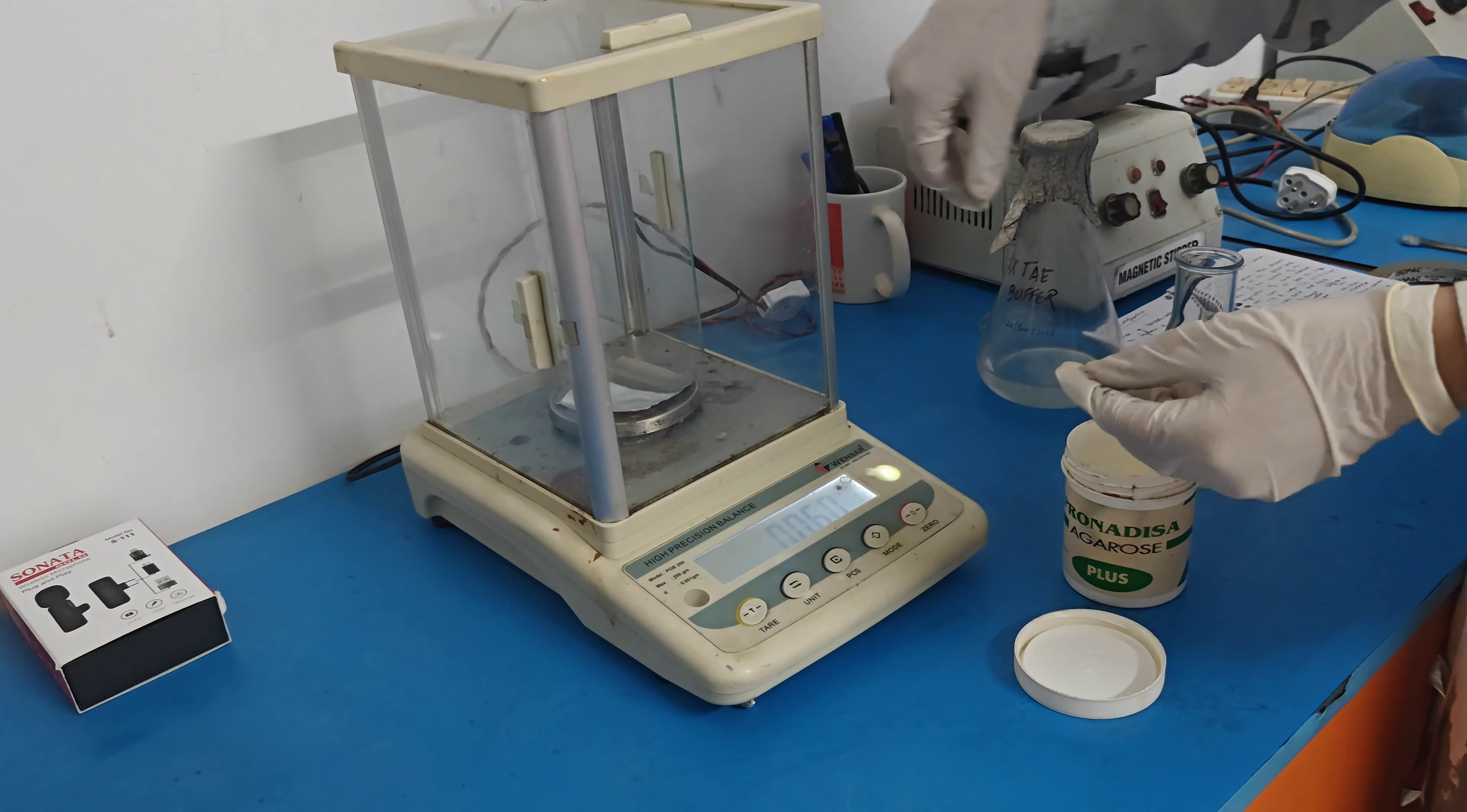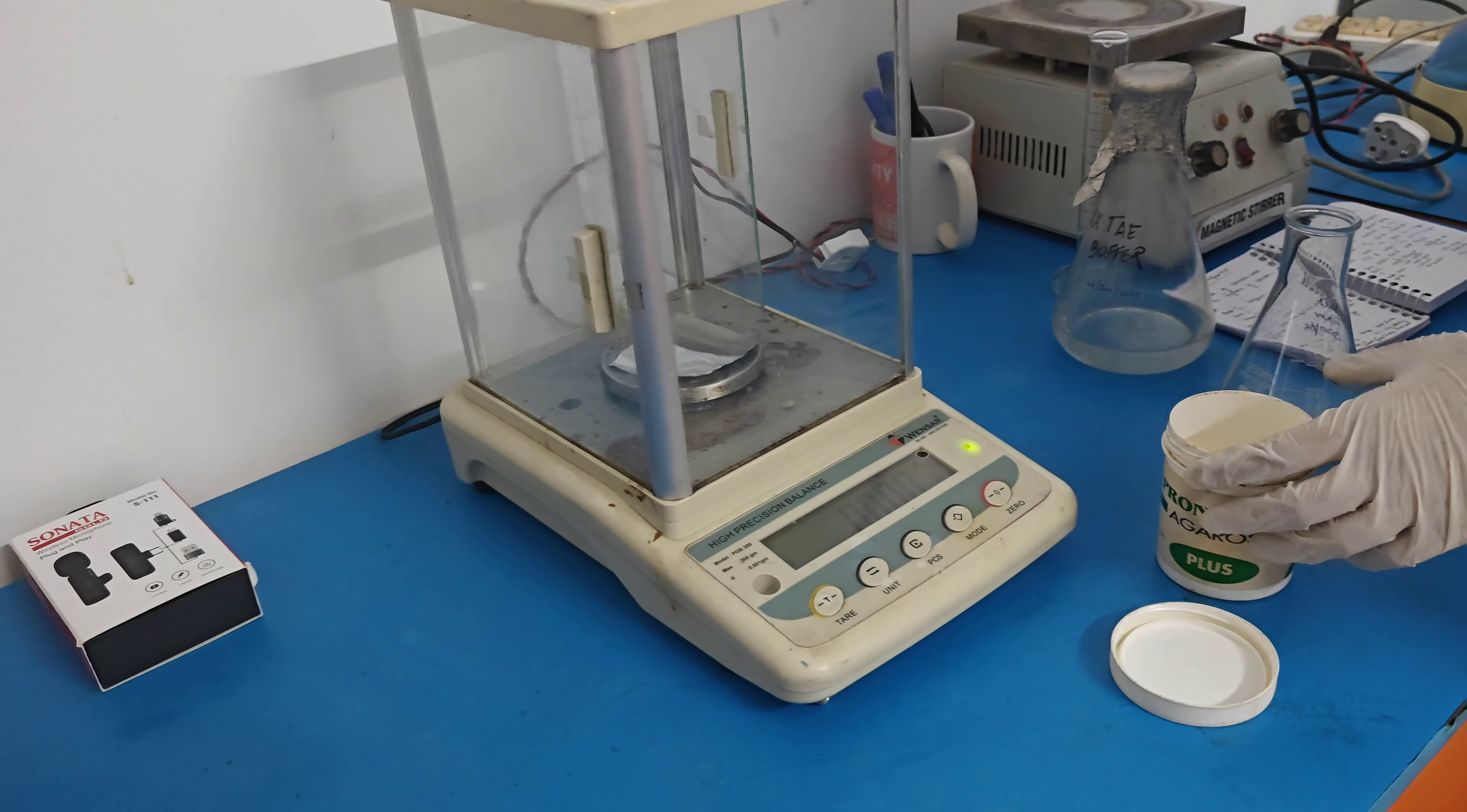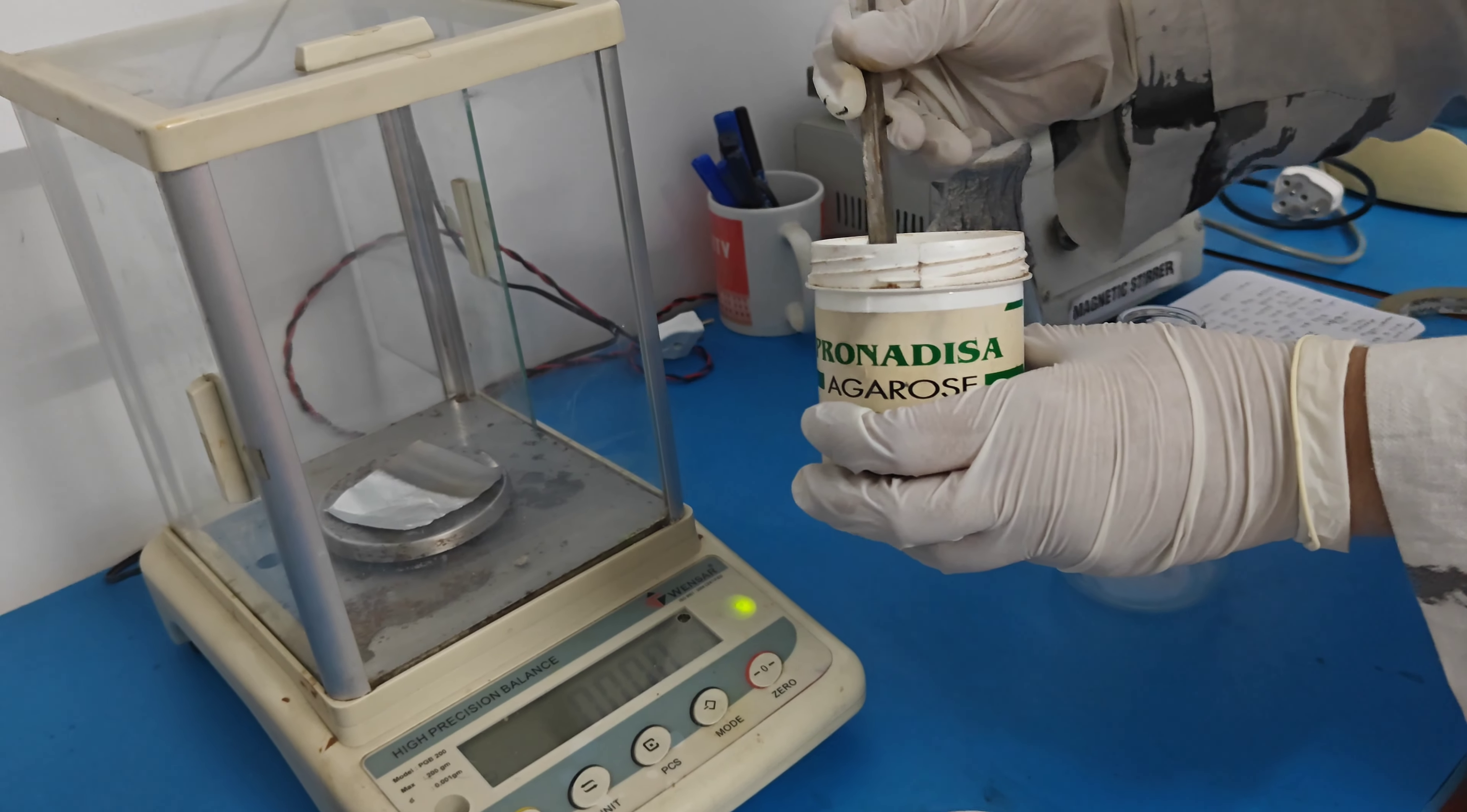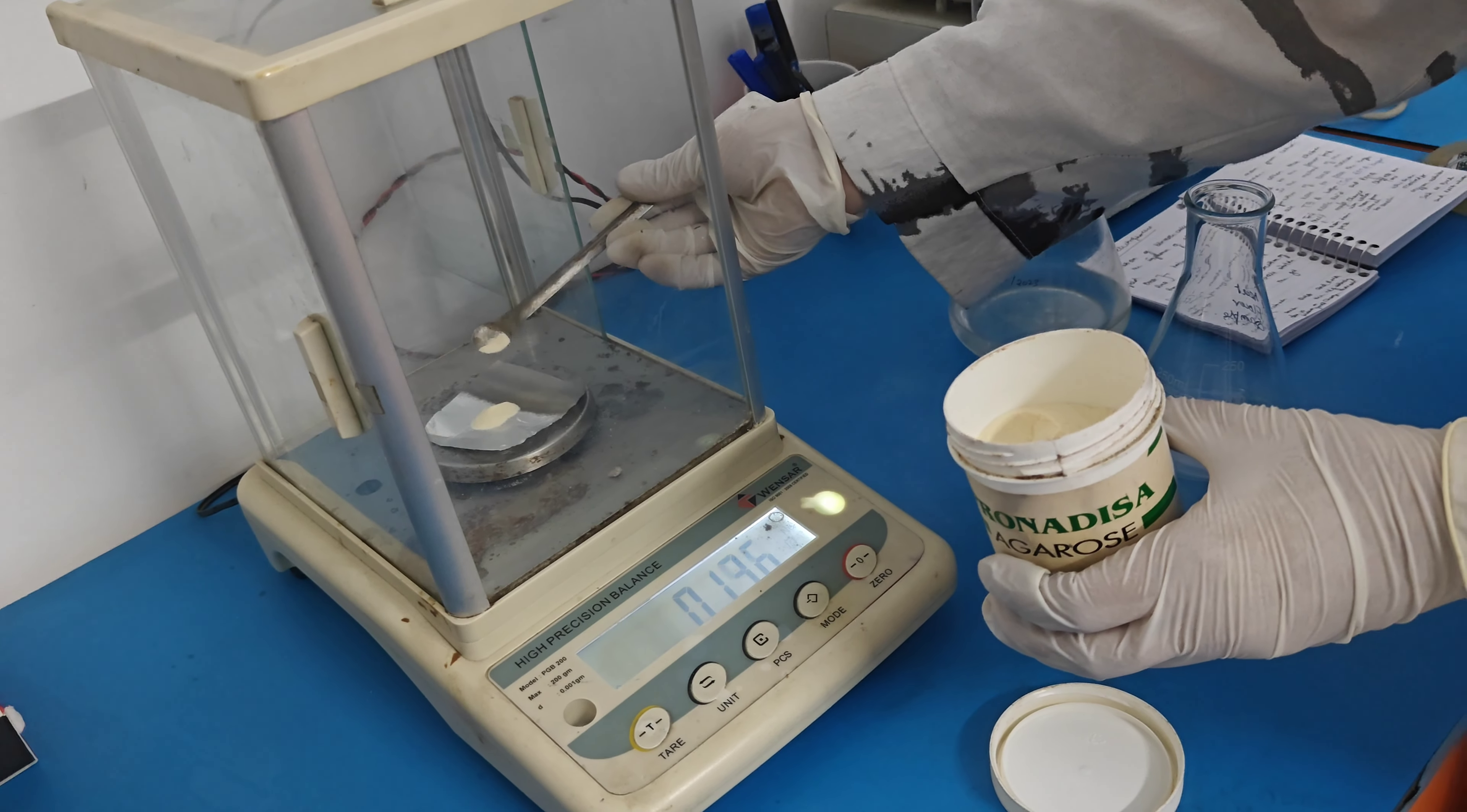We put the paper inside the weighing balance and tare it away. Now I am going to weigh agarose gel around 0.12 gram.